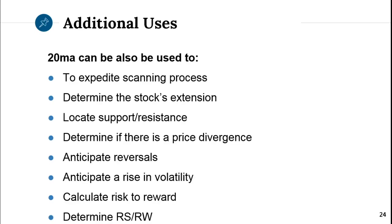Additional uses for the 20: it can be used to expedite the scanning process — I can go 3 to 4 charts per second when scanning on TC2000, simply because I'm using the 20. It helps determine if the stock has extension, if it's overbought or oversold, and to locate support and resistance, which often coincides with the location of the 20MA. It can also be used to determine price divergence.